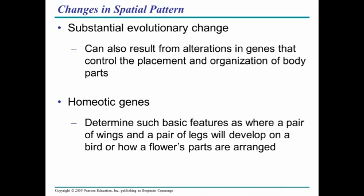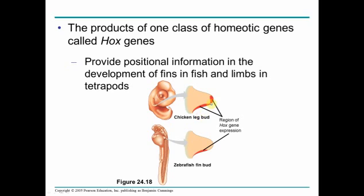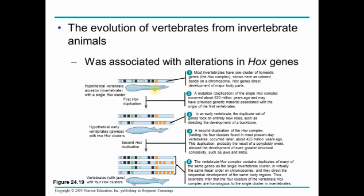Homeotic genes are one type of gene tied to heterochrony, where certain parts of the body grow at different times due to their existence. Here you see legs growing due to homeotic genes turning on in a group of cells. The same occurs in the zebrafish with a fin — they all incorporate these homeotic genes, more specifically called Hox genes. This is believed to be part of the reason why, as things evolve and get more complex, they gain more structures: Hox genes become duplicated, and as more become duplicated there is more ability to turn on and off to form new structures.